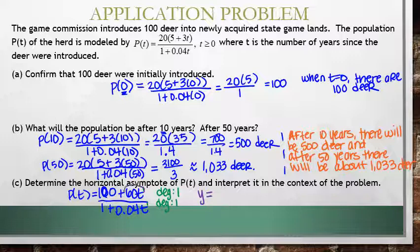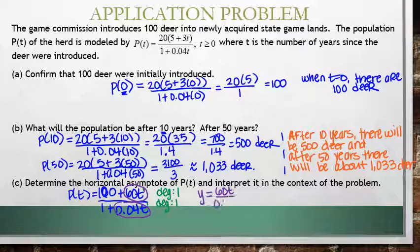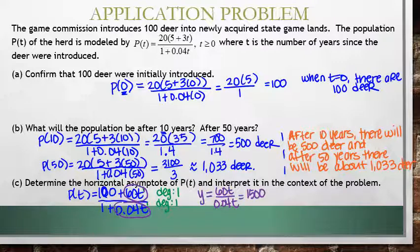The leading term on top is actually 60t. Remember, the leading term is the term that holds that highest degree, that has that highest exponent. The leading term on bottom is 0.04t. When I divide those out, I get 1500. So my horizontal asymptote is 1500.